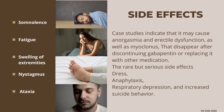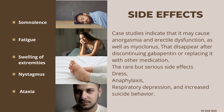Side effects — common: somnolence, fatigue, swelling of extremities, nystagmus, and ataxia. Case studies indicate it may also cause anorgasmia and erectile dysfunction, as well as myoclonus, which disappear after discontinuing gabapentin or replacing it with other medication. Rare but serious side effects include DRESS syndrome, anaphylaxis, respiratory depression, and increased suicidal behavior.